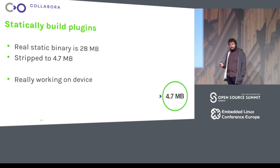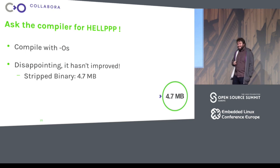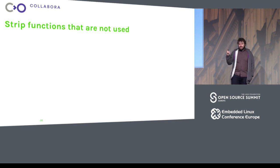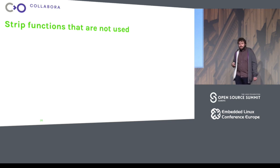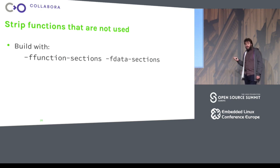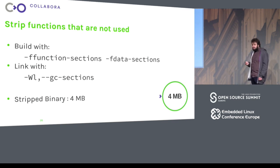Five megabytes is a lot out of 16 megabytes. I asked the compiler for help. I tried compiling with -Os — very disappointing, exactly the same size. Then I tried stripping unused functions: normally the compiler takes each C file and turns it into an object file containing all functions of that C file, all linked in even if not used. But with -ffunction-sections and -fdata-sections flags, the compiler creates a separate object for each function and data object, and then the linker with --gc-sections removes all the unused ones. That made it a bit smaller: four megabytes. We saved a little.